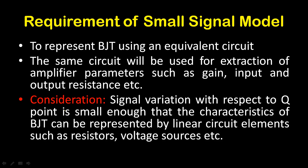When you are going to formulate the equivalent circuit, one thing you need to follow is that the signal variation should be small enough with respect to the Q-point, so that the characteristics of BJT can be represented by linear circuit elements such as resistors, dependent sources, etc.